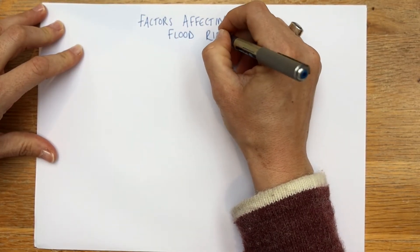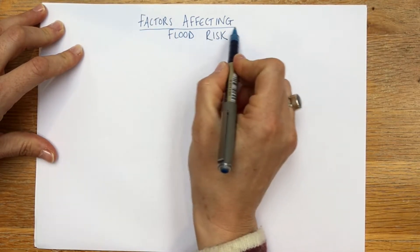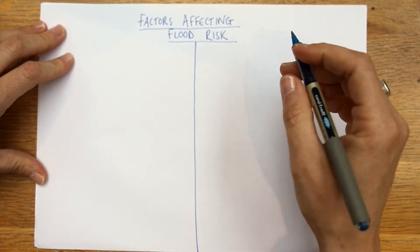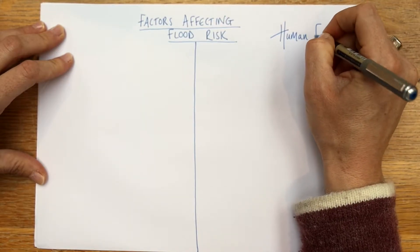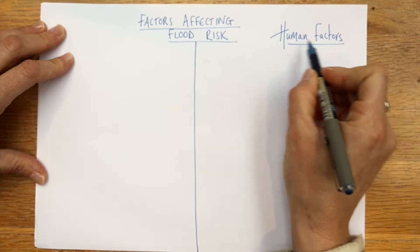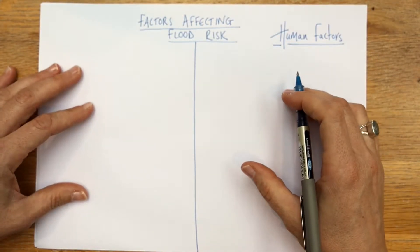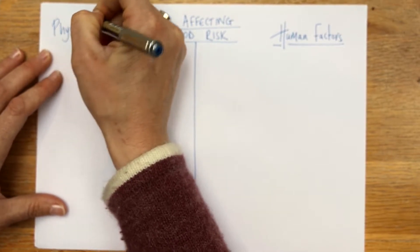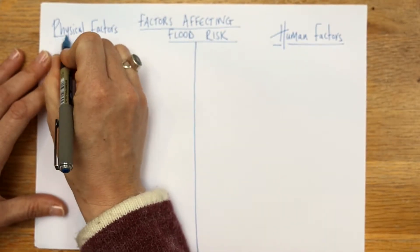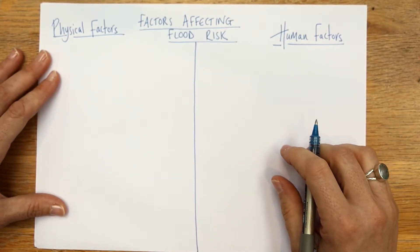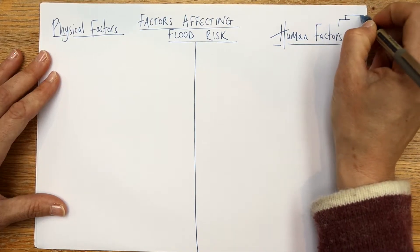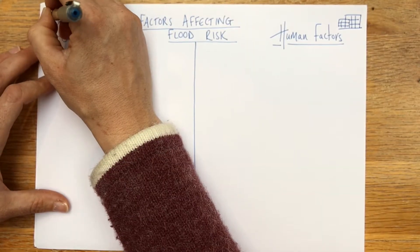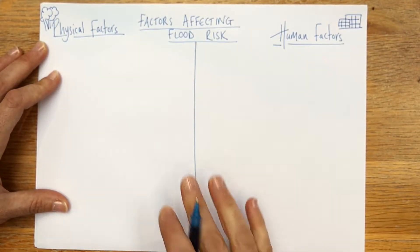We're going to break these down into two categories to keep things simple. Split your page down the middle with a line. On the right side we'll have our human factors — anything man-made or how humans have interacted with the environment to increase the risk of flooding. On the left side we'll have our physical factors, which relate to natural things. Draw some buildings on the right and a tree on the left to help remember: physical factors and human factors.